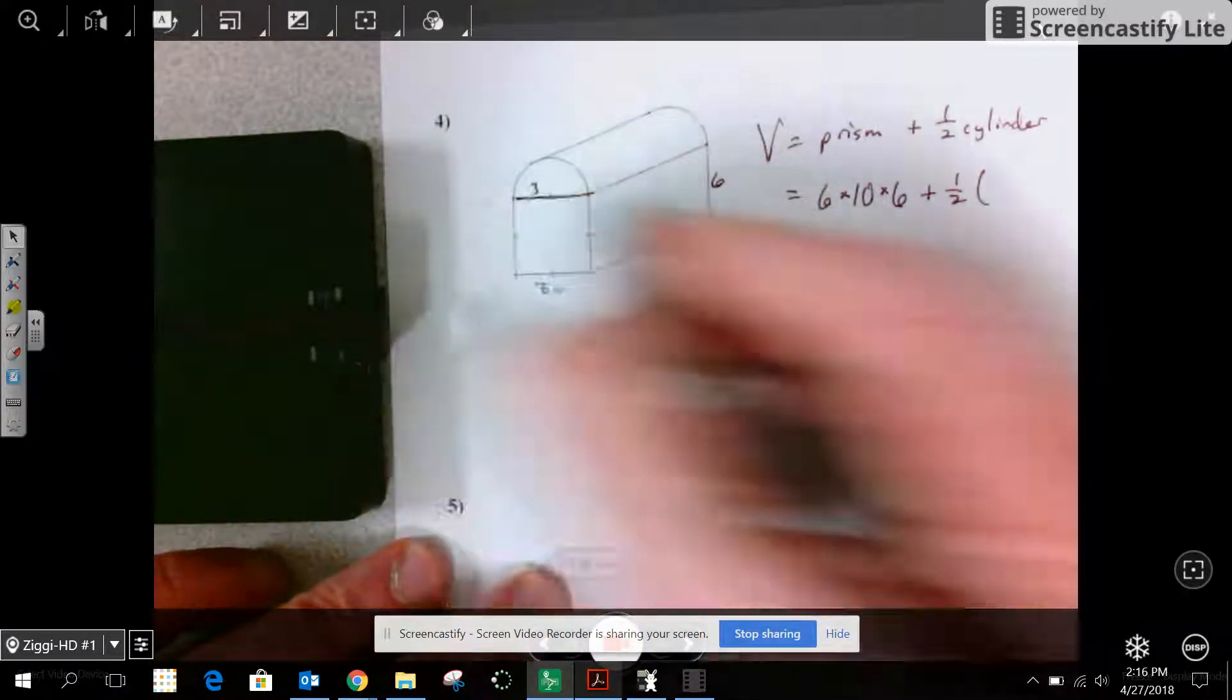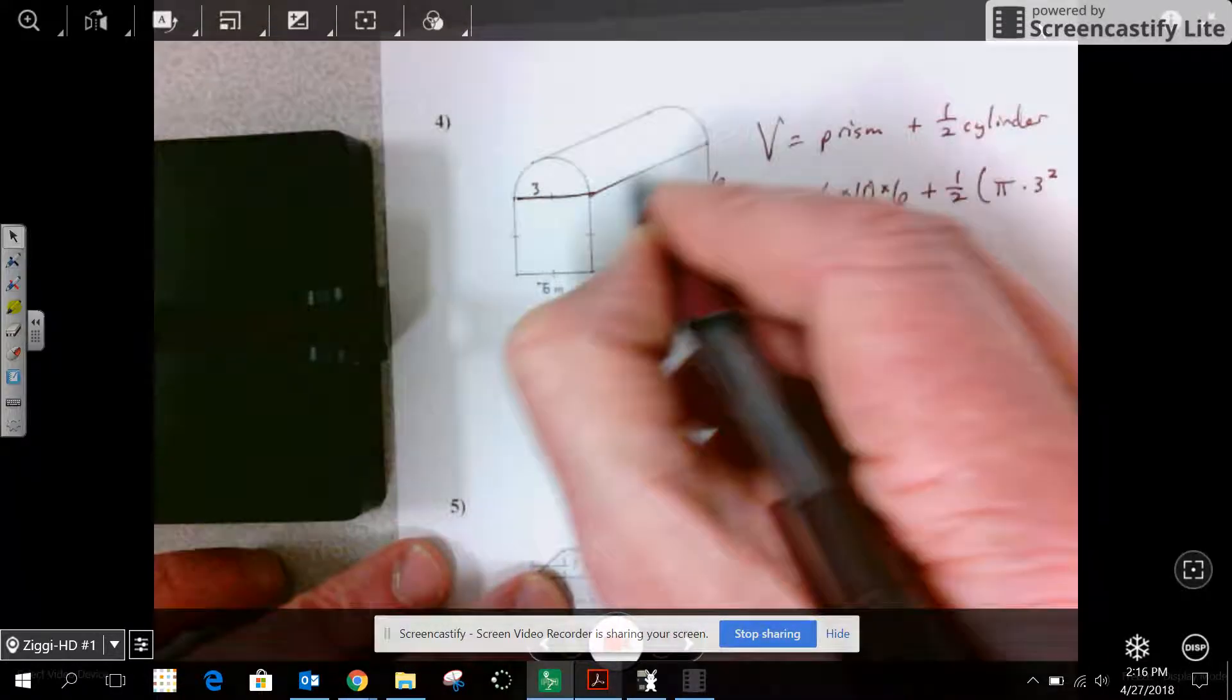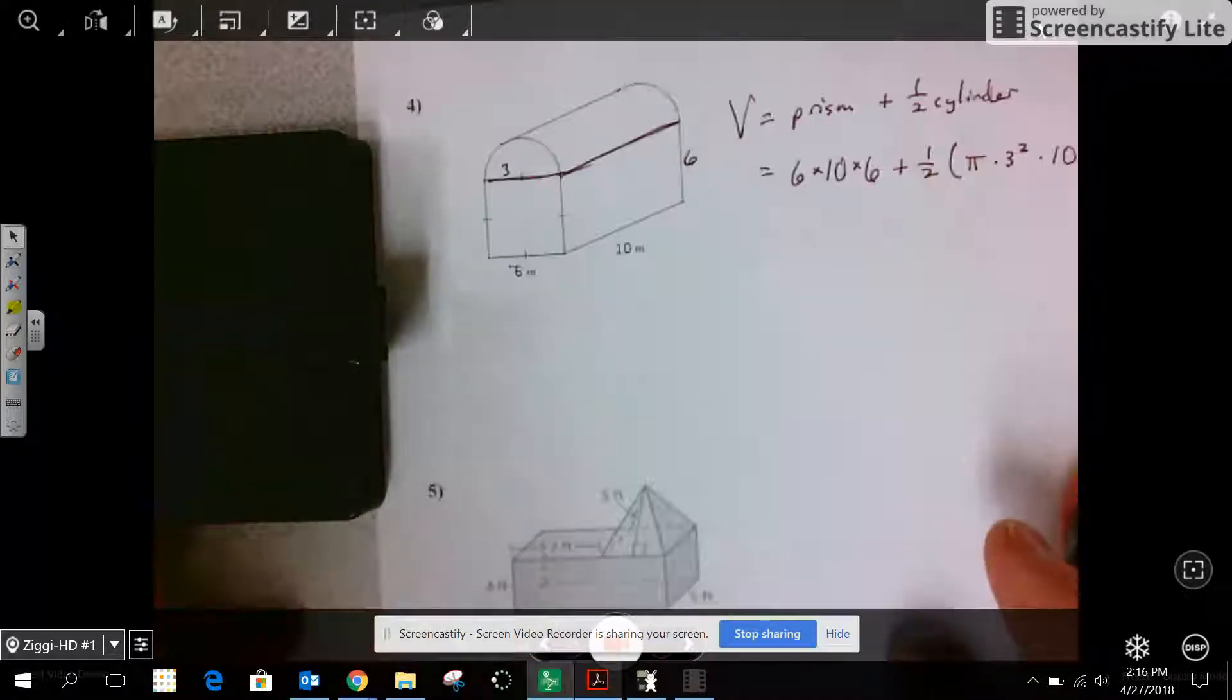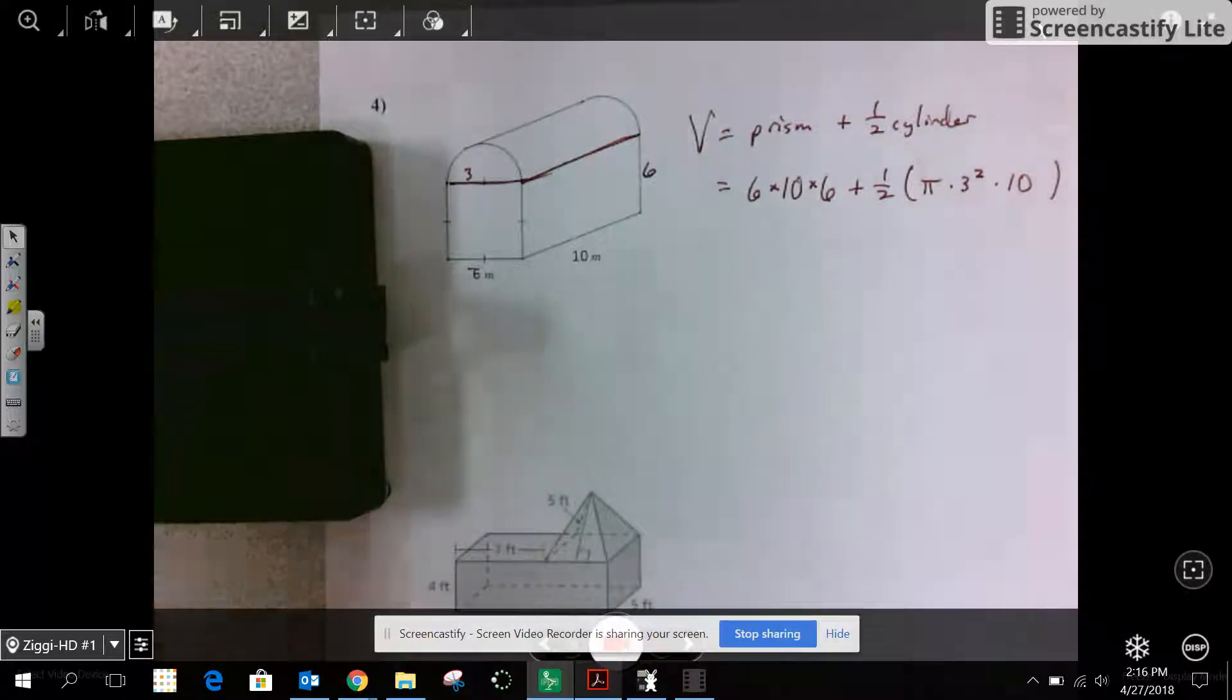Well, if the whole distance is 6, then r is 3. So pi times 3 squared times height, as if I were setting it on its end. Now it's just a calculator question.